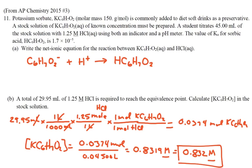For the free response portion, part A: Potassium sorbate is commonly added to diet soft drinks as a preservative. A stock solution of potassium sorbate of known concentration must be prepared. A student titrates 45 milliliters of the stock solution with 1.25 molar HCl using both an indicator and a pH meter. The value of Ka for sorbic acid is 1.7 times 10 to the minus 5.